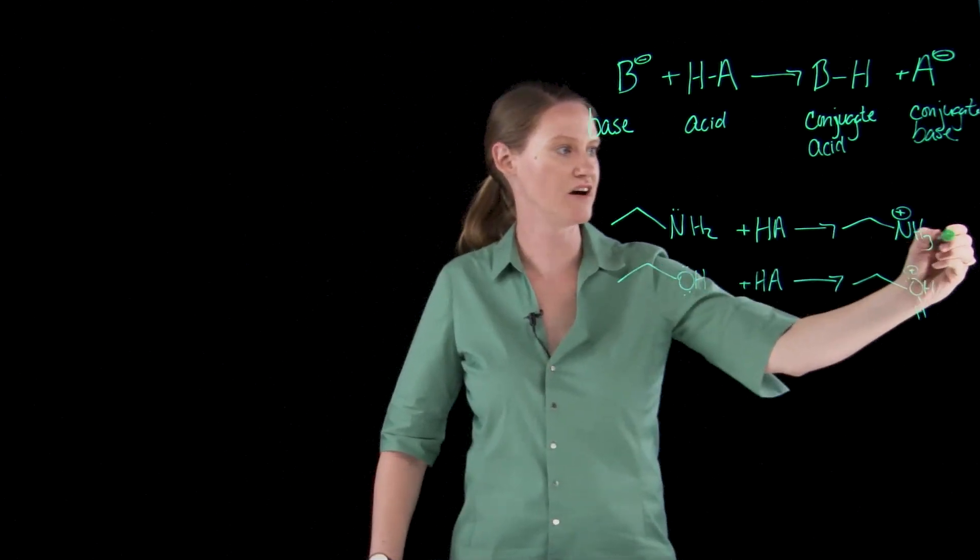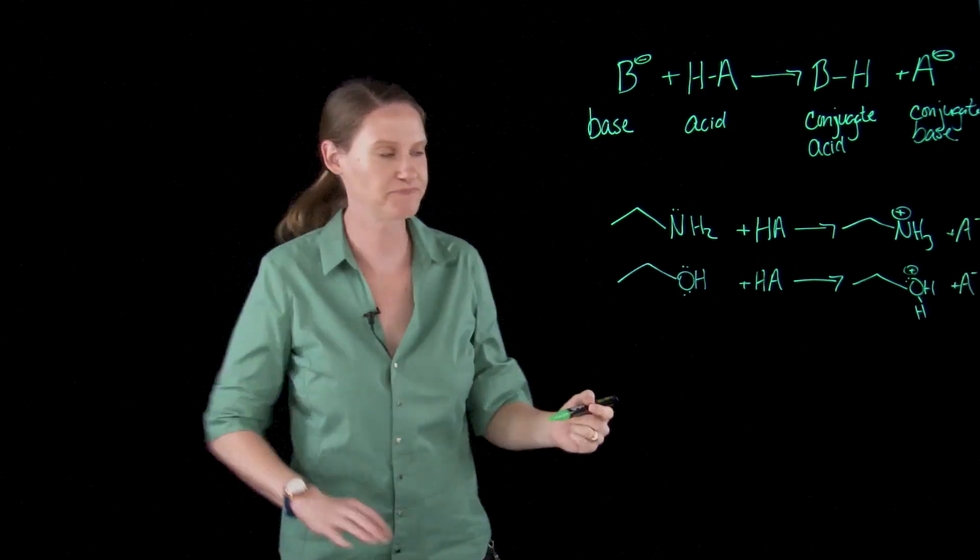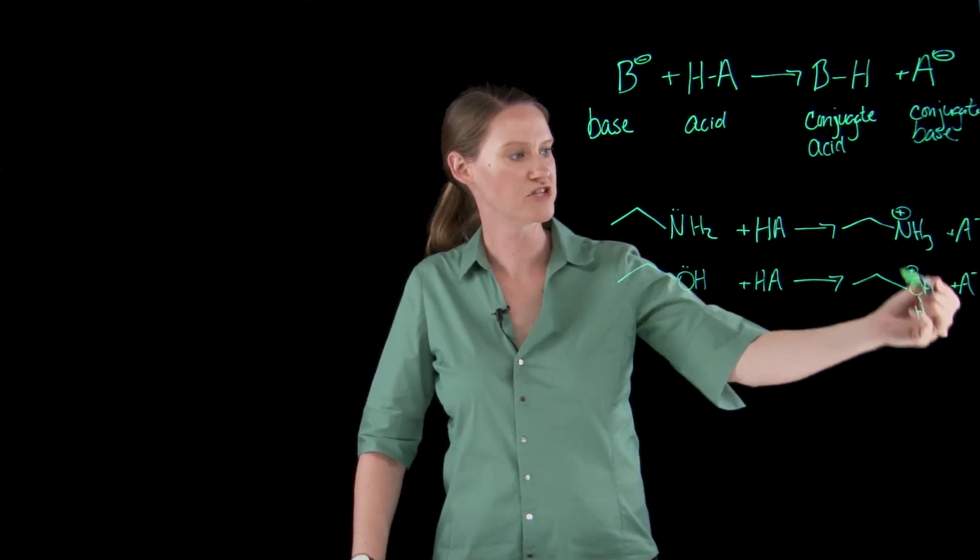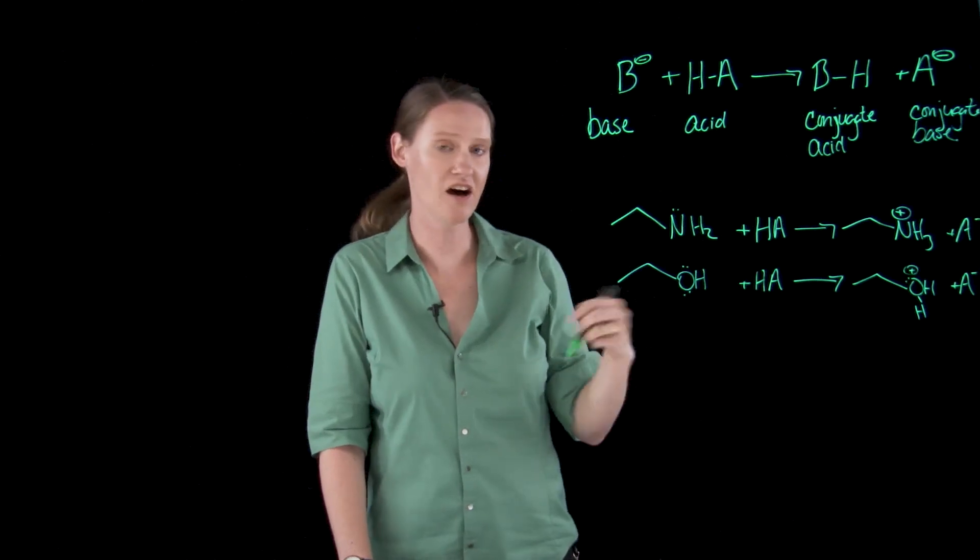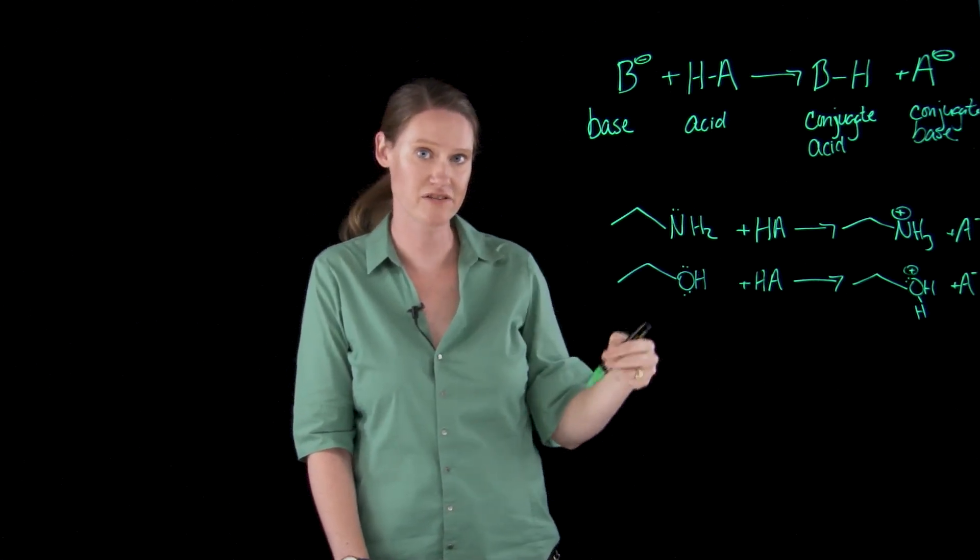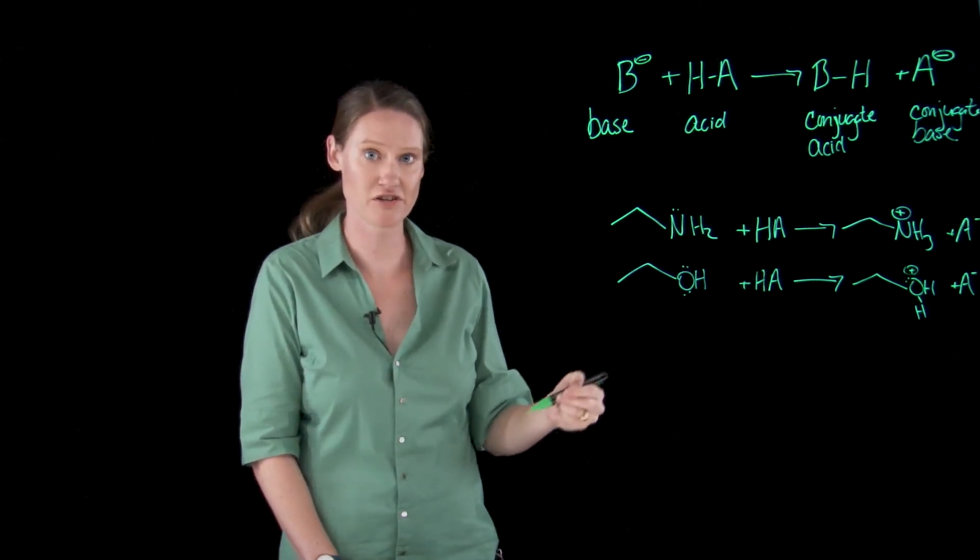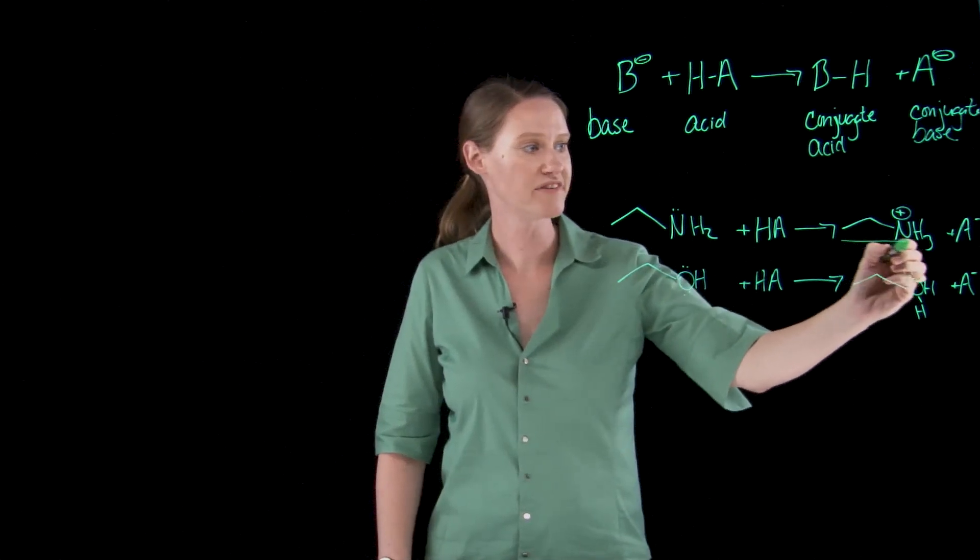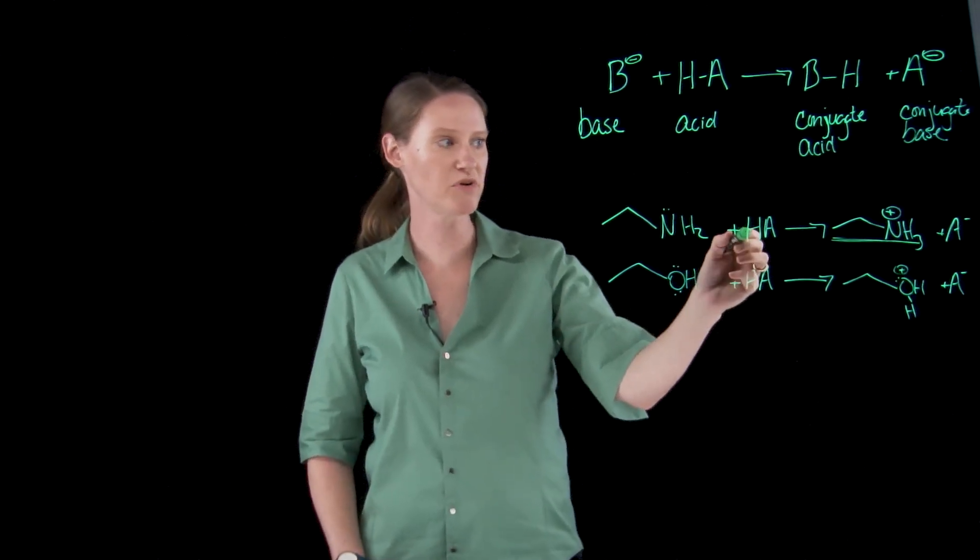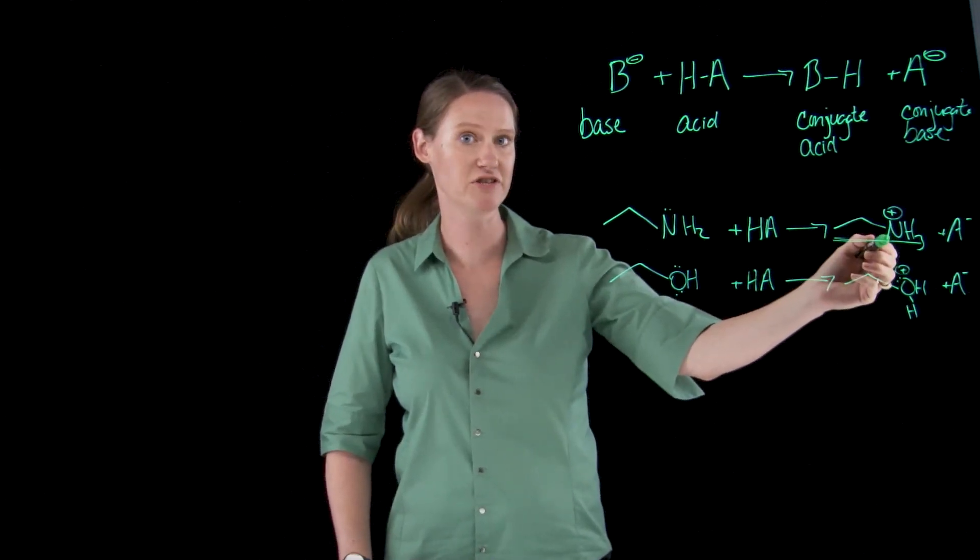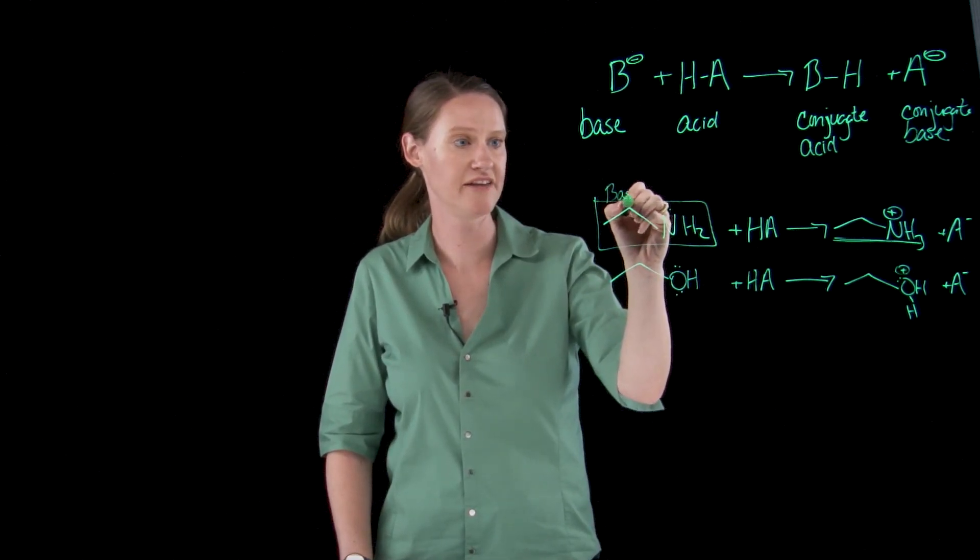We've also made the conjugate bases of HA but those are the same in both cases so we don't care about that. If we compare these two positively charged species we can use electronegativity to say that oxygen is more electronegative than nitrogen. That means that nitrogen is going to be more stable as a positively charged entity. If this is more stable that means that this molecule is more likely to steal the proton and become positively charged, meaning that this one is more basic than the alcohol.